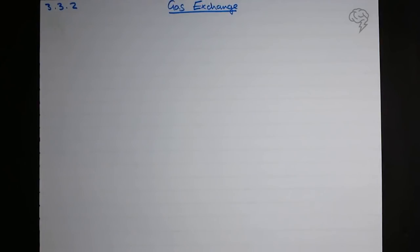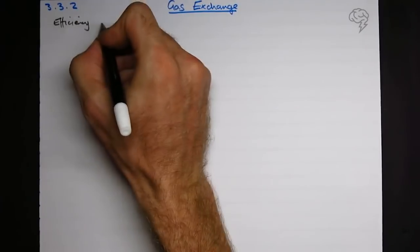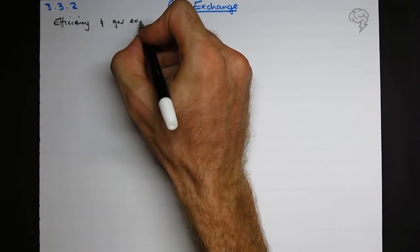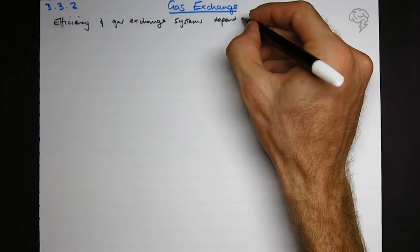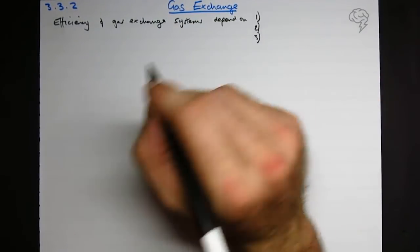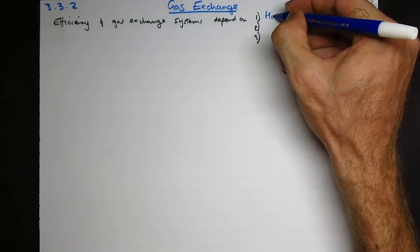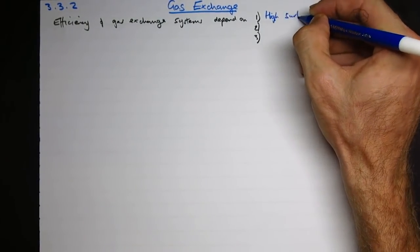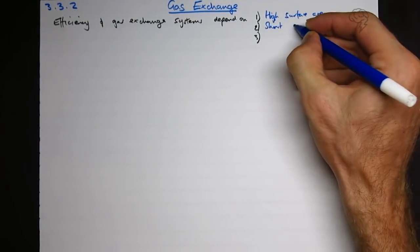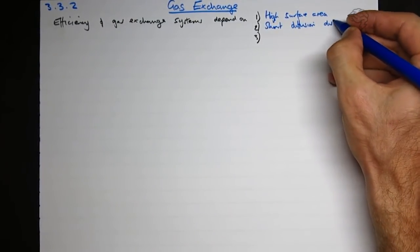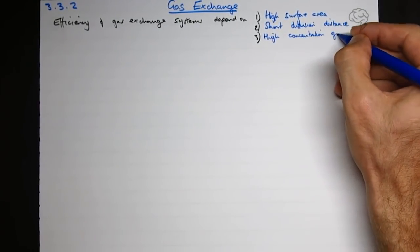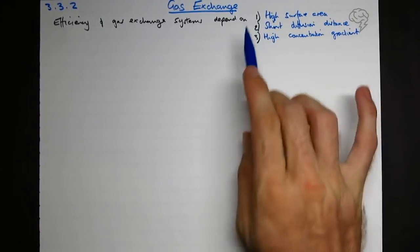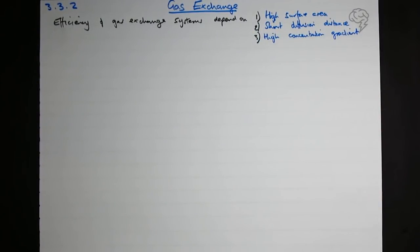Gas exchange - the efficiency of gas exchange in lungs depends totally on diffusion, and diffusion depends on three factors. Try and think of those whilst I write this out. So three things: we need a high surface area, doesn't matter which order you say these in, we also need a short diffusion distance, and we need a high concentration gradient.